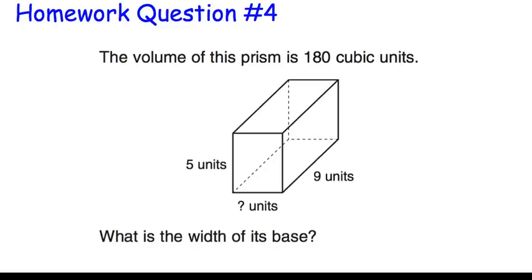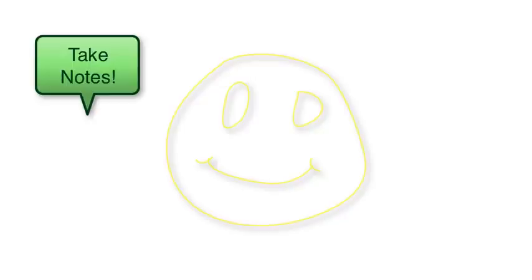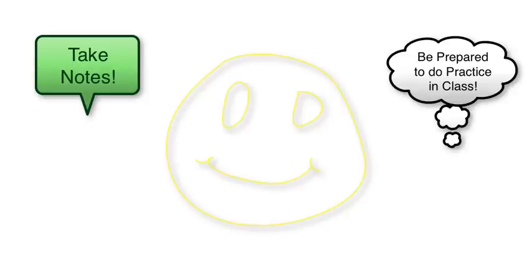Here's your last homework question. The volume of the prism is 180 cubic units — what is the width of its base? You're going to use the formula: volume equals length times width times height. You don't know the width, but you know the length and the height, so you can figure out what the width is. Make sure you've shown your work in your notebook, and we also want to see those formulas written down. Take notes as you watch these videos so when you come to class tomorrow you're prepared for the practice we will do. Have a good night and we'll see you tomorrow.